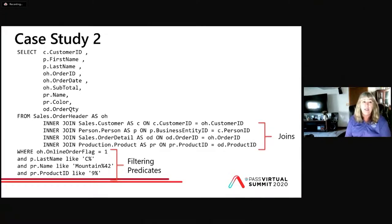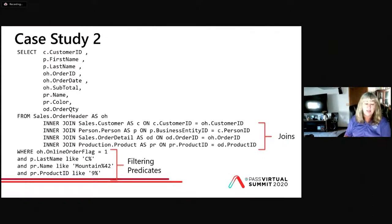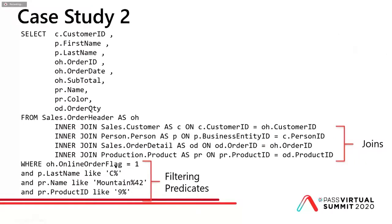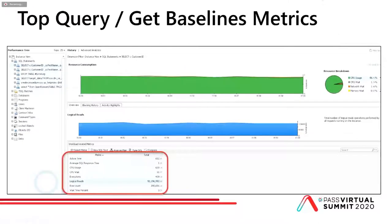My second case study involves an AdventureWorks query. We're getting customer and order information from SalesOrderHeader, joining to Customer on CustomerID, then Customer to Person on BusinessEntityID to PersonID, then OrderDetail to OrderHeader on OrderID, and then Product to OrderDetail on ProductID. Filtering predicates: online order flag equals 1, last name LIKE 'C%', product name LIKE 'mountain%42', and product ID LIKE '9%'. We found this through wait time analysis — top query in the database. CPU usage was 97%, which is very unusual since SQL Server is typically not CPU-bound. If you have CPU-bound SQL Server instances, look for implicit conversions or high logical reads.